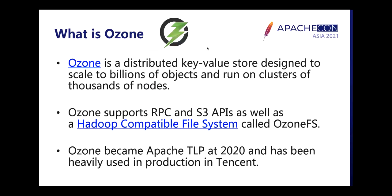Apache Ozone is a distributed key-value store designed to scale to billions of objects and run on clusters of thousands of nodes. Ozone supports RPC and S3 APIs as well as a Hadoop-compatible file system called OzoneFS. Ozone originally came from the Hadoop community and became an Apache top-level project in 2020. It is now heavily used in production at Tencent.